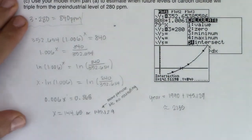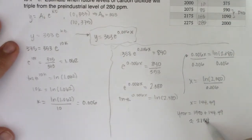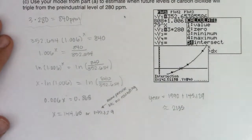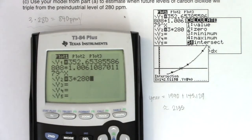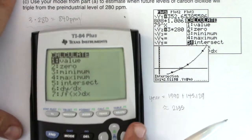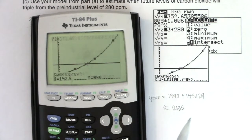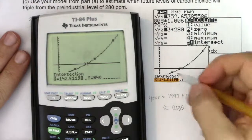I need to isolate that exponential term. 1.006^x equals 840 over 352.654. I'm going to take the natural log of both sides because my variable's up in an exponent. From the power rule, I bring this down: x times ln(1.006) equals ln(840/352.654). I can write this as 0.006x equals 0.868. Divide both sides by 0.006, and I'm looking at 144.65.